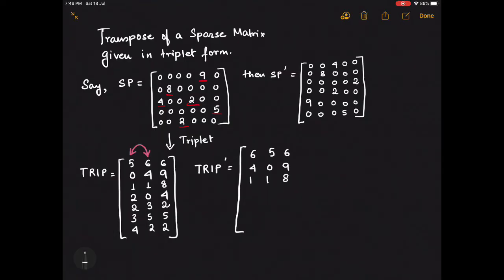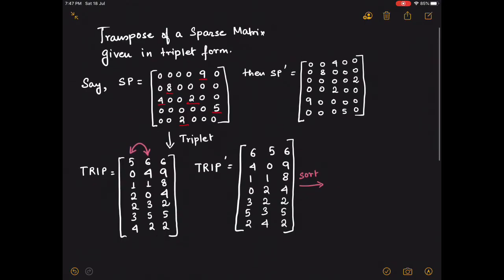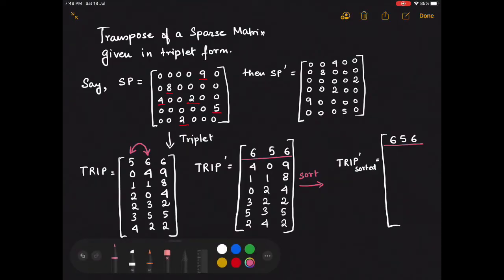The final step for finding the transpose is simply sorting the matrix TRIP dash based upon the entries of the 0th column first, and if two rows have the same value in the 0th column then we will sort them based upon the entry in the 1st column. The first row however remains unchanged because it defines the characteristic of the matrix.